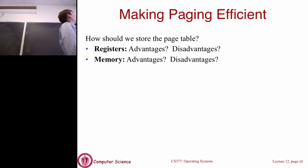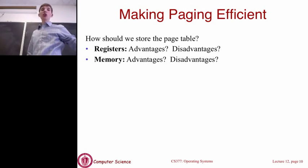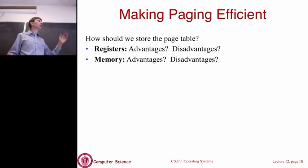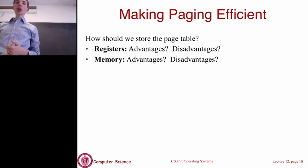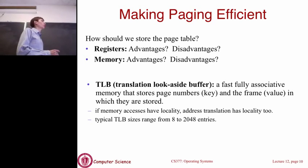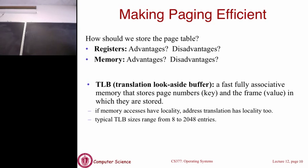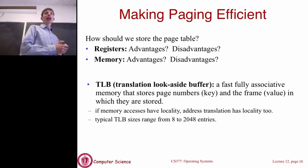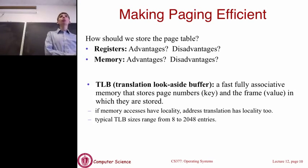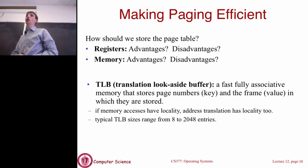We essentially want both the speed of registers with the lack of size restrictions of storing it in memory. The way we do this is with hardware support called a TLB — a translation lookaside buffer. This is basically like a cache, like an L1 cache, mapping page numbers to the frames they're stored in.